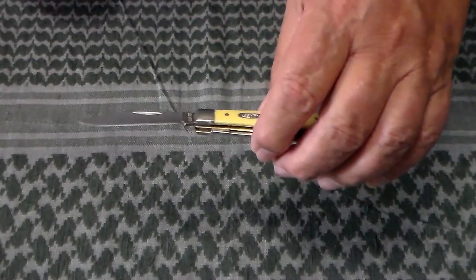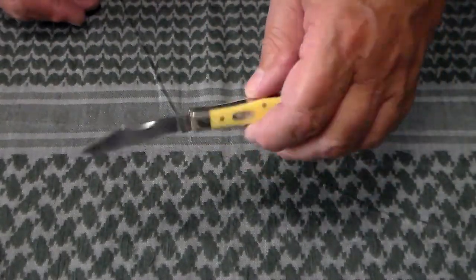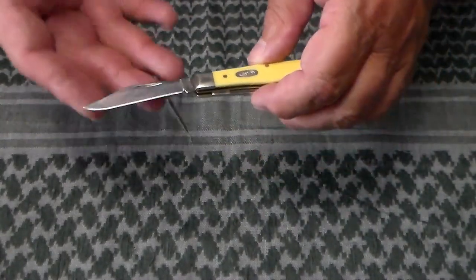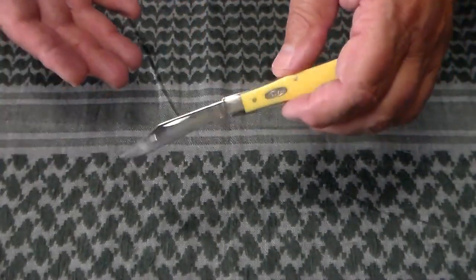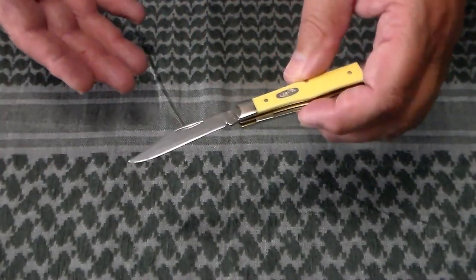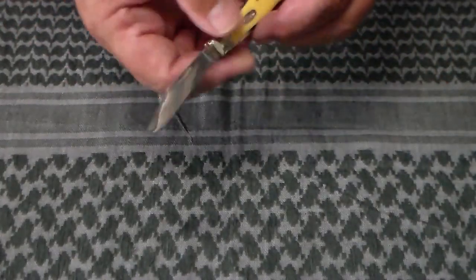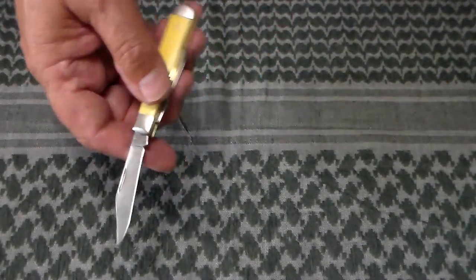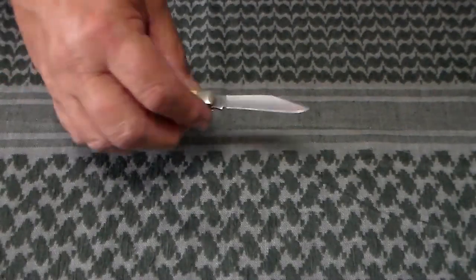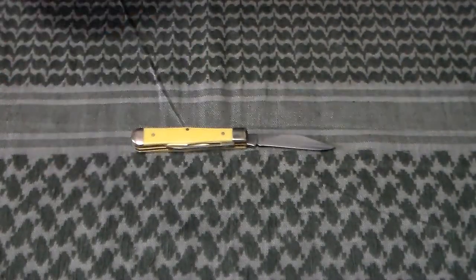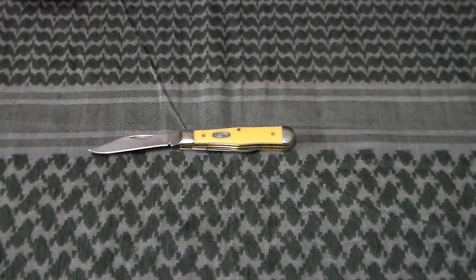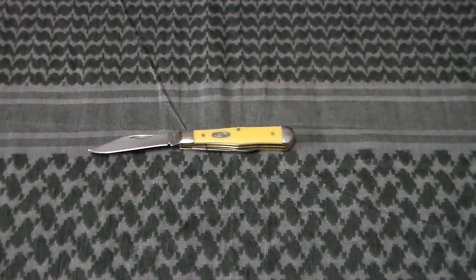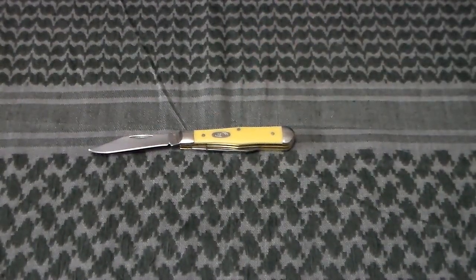Most of them come with a very rough edge. It only takes a couple minutes to get them cleaned up, but you would think straight out of the box it would be much sharper. But that's how it is. Well, that's all I have on the Case Small Swell Center Jackknife.